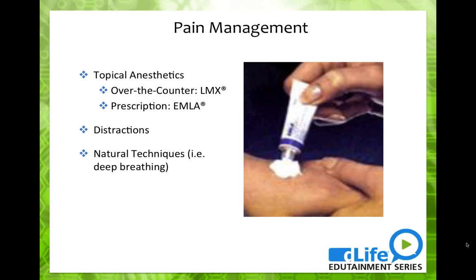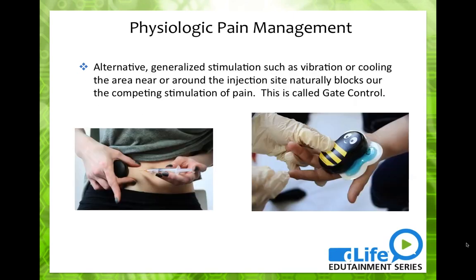Topical anesthetics are a great way to start. Using visual distractions — such as cards that prompt counting and finding visual items — are also highly effective. You don't need specific cards: any visual distraction works — a poster, a picture on the wall, counting ceiling tiles. Additionally, natural techniques like deep breathing and stretching can engage another part of the body to decrease the pain sensation.